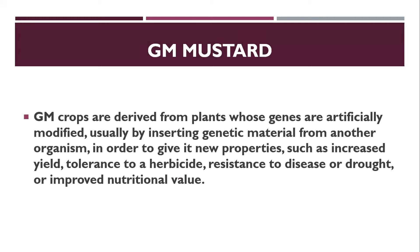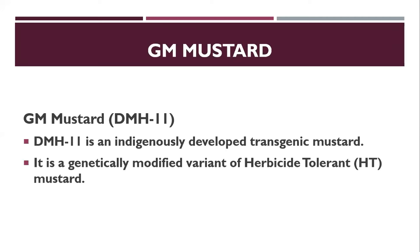For GM crops, genes from other organisms can be inserted into other organisms. This allows us to add improved yield, herbicide tolerance, disease resistance, and improved nutritional value to genetically modified crops. The specific GM mustard variety is called DMH-11, which is a transgenic mustard that is herbicide tolerant.